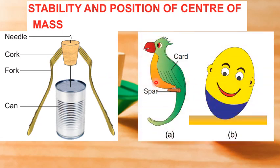Another example is a perched parrot which is made heavy at its tail. And another example is a toy that keeps itself upright when tilted. It has a heavy semi-spherical base, as you can see here. When it is tilted, its center of gravity rises. It then returns to its upright position, at which its center of mass is at the lowest.